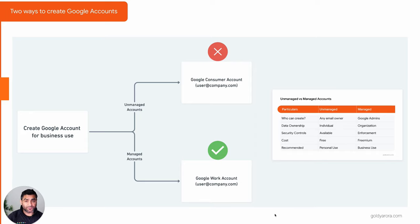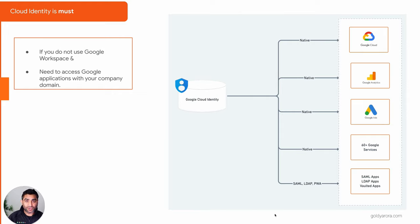I have other videos which talk about the differences between consumer and work accounts and how you can convert your consumer account to a work account — I'll put those in the description. My assumption is that you want to use Google offerings for your business. For that, you should have Google Cloud Identity in place where these two conditions are met: number one, you would be using Google offerings for your business, and number two, today you do not use Google Workspace.